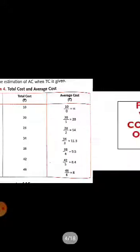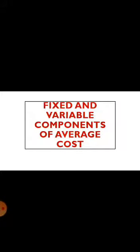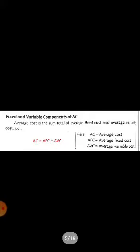We have seen the formula for average cost. Now, average cost has two components: fixed cost and variable cost — average fixed cost and average variable cost. Average cost is the sum of average fixed cost and average variable cost. The formula is: AC = AFC + AVC, where AC is average cost, AFC is average fixed cost, and AVC is average variable cost.